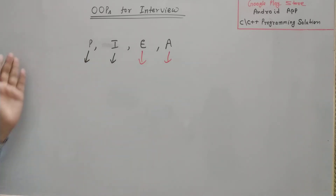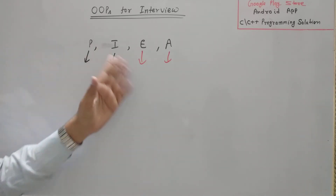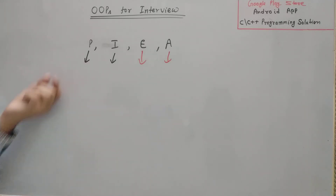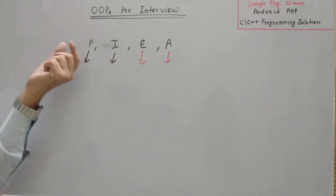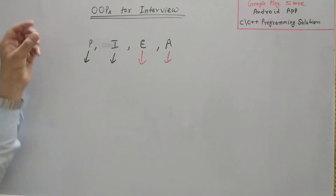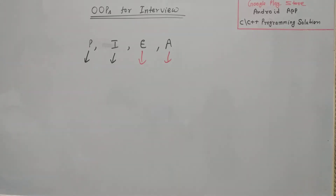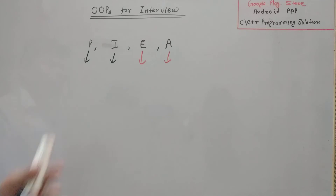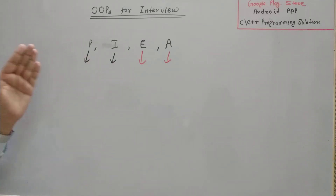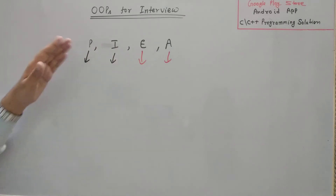You can briefly explain the definition of all these four properties. After that, they will ask a question from any one of them and you have to answer. I will discuss all the questions that can be asked about polymorphism, inheritance, encapsulation, and abstraction, and I will explain each of them one by one.